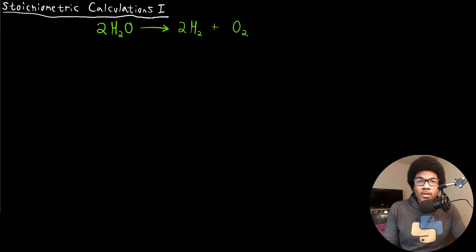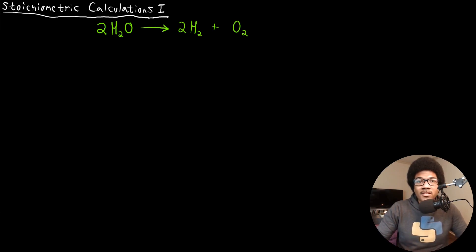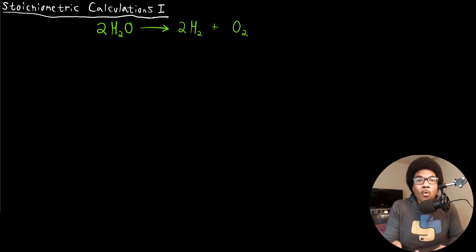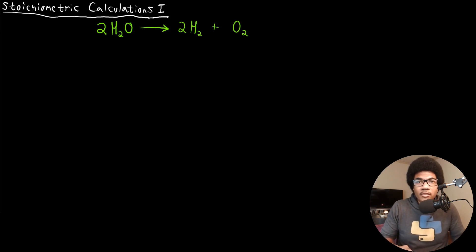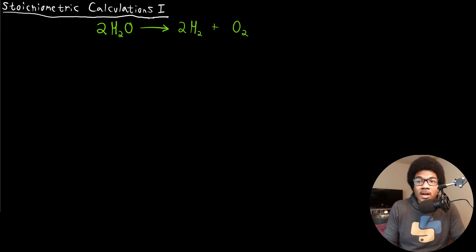In this video, we're going to look at how to do stoichiometric calculations. When we first started talking about stoichiometry, we mentioned that the main goal of stoichiometry is to be able to measure how quantities change throughout a chemical reaction. So we've set up more or less all of the foundational knowledge that we need in order to start doing these types of calculations.